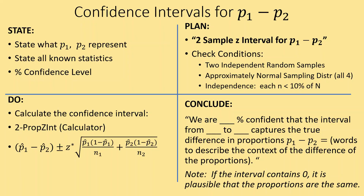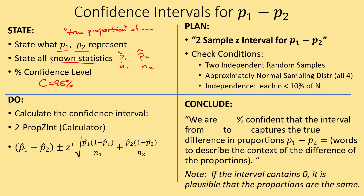For confidence intervals, we follow our state-plan-do-conclude approach. When stating, we have to define what P1 and P2 stand for — both need the phrase 'true proportion of' whatever they're talking about. List all known statistics: P1-hat, P2-hat, N1, N2, and the confidence level. We're using two samples with proportions, so we use Z's. We need two independent random samples — don't just write 'random,' write 'independent random samples.' The formula is the difference of the sample proportions plus or minus the critical Z value times the standard error.